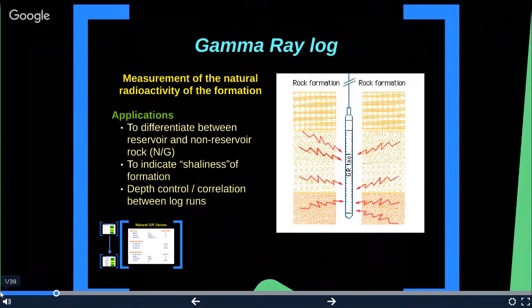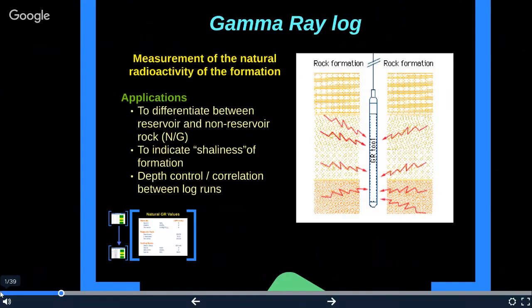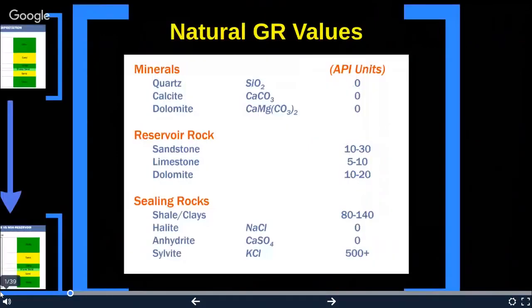Its applications are to differentiate between reservoir and non-reservoir rock, to indicate shaliness of formation, and depth control, correlation between log runs. Here you see the table with some natural GR values of different minerals, reservoir rocks, and sealing rocks. As you see, the maximum API units corresponds to the shale, clays, and sylvites.